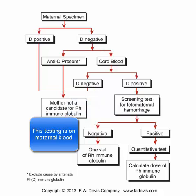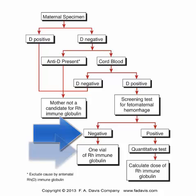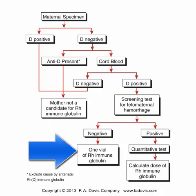If that screening test, which is called the Rosette test, is negative, then one vial — which is 300 micrograms of RhoGAM — is fine. RhoGAM is a commercial name for RH immunoglobulin.